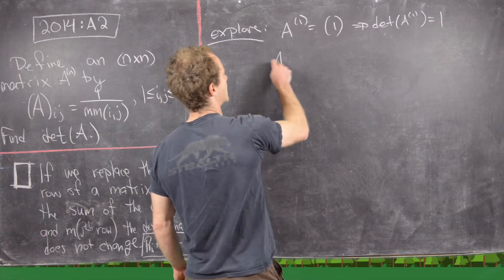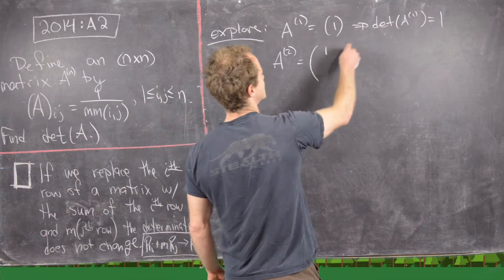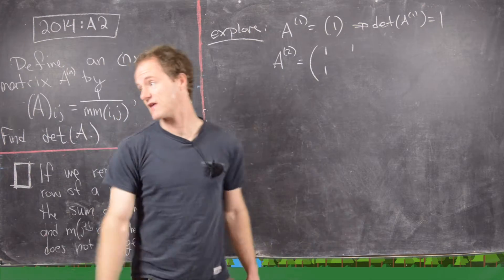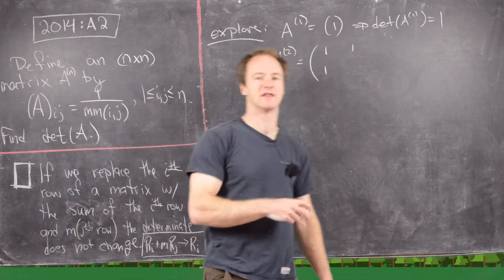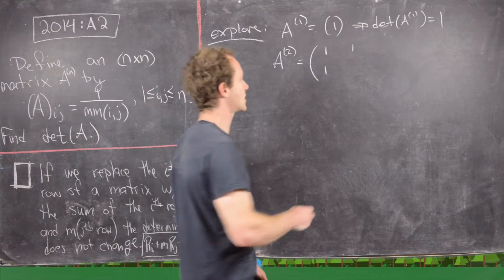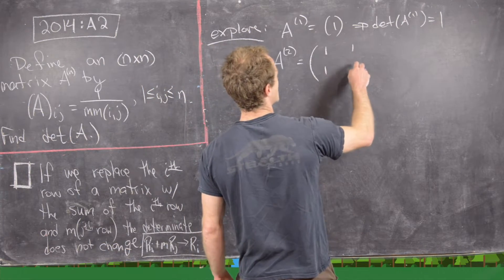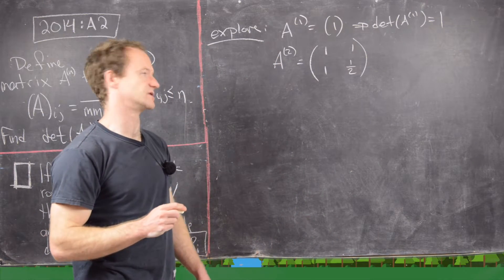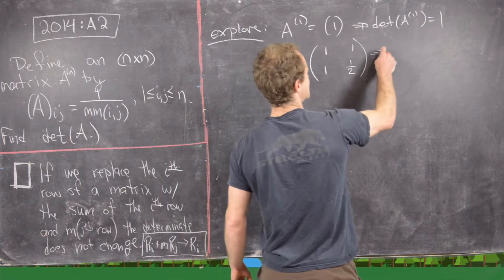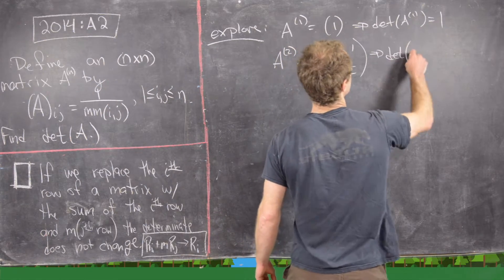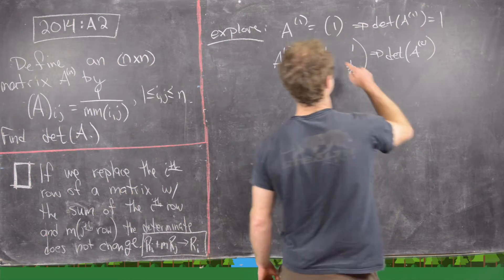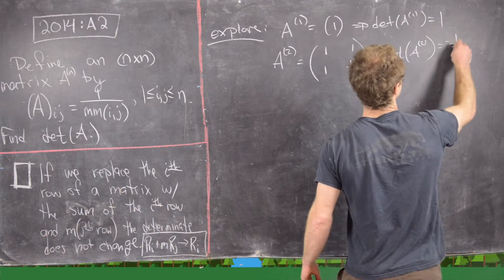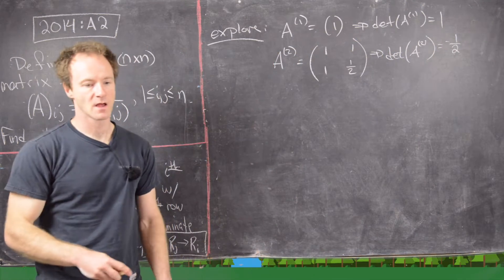Now let's look at A^2. The first row and first column are all 1s, and the (2,2) entry is 1/2 because the minimum of 2 and 2 is 2. We can easily calculate the determinant of this 2 by 2 matrix: that's 1/2 minus 1, which equals negative 1/2.